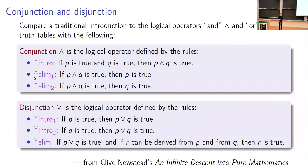The problem with truth tables is they're mind-numbingly boring. And they're also a little bit beside the point, which is to teach undergraduates how to analyze the logical structure of a statement and then use that to guide their proof writing. So I don't teach truth tables anymore. Instead, I've switched to this wonderful textbook by Clive Newsted, An Infinite Descent into Pure Mathematics.